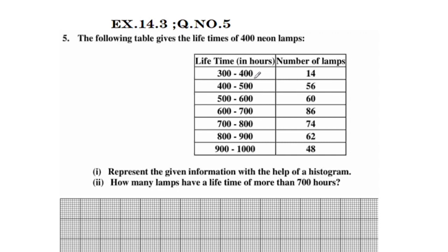The first class interval's upper limit equals the second class interval's lower limit, so the data is continuous. The size of the class interval, which is the width, equals 100 — for example, 400 minus 300 equals 100, and 500 minus 400 equals 100. All class intervals have a width of 100.